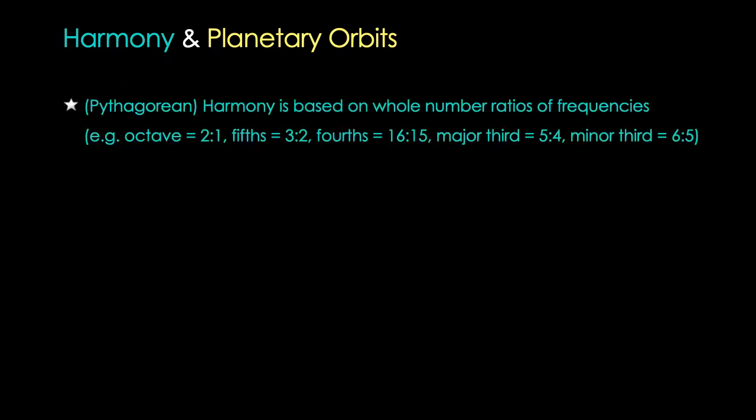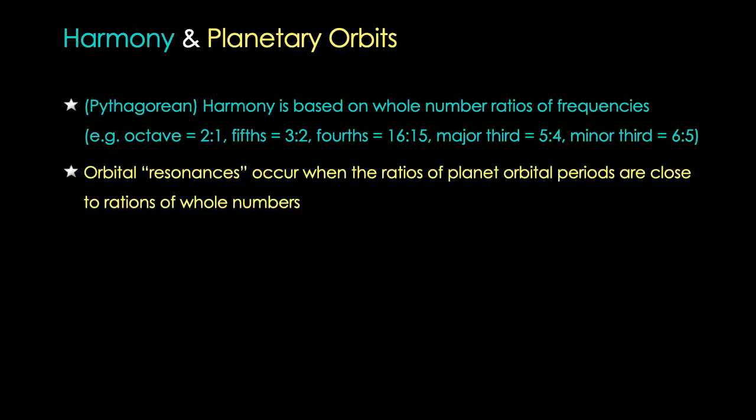You see that musical harmony and planetary orbital dynamics have a lot in common. Pythagorean musical harmony is based upon chords of notes whose ratios of frequencies are ratios of whole numbers. For instance, a fifth is a ratio of three to two. In orbital dynamics, the resonances occur when the planet orbital periods are also close to ratios of whole numbers.